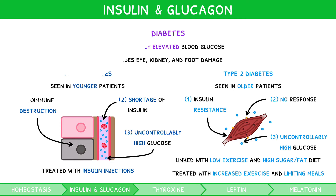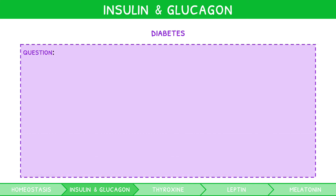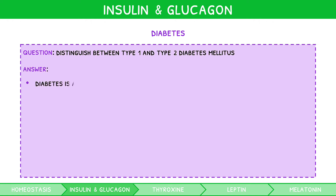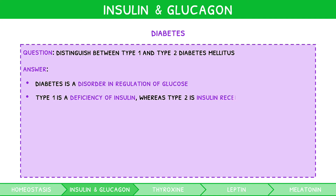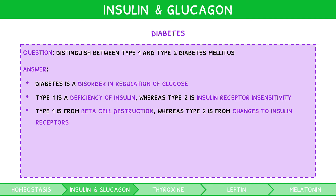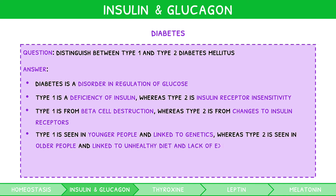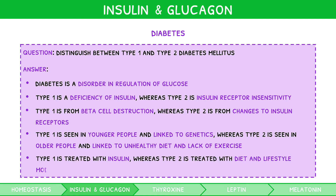Now that you understand the two types of diabetes, we can explore a common exam question: distinguish between type 1 and type 2 diabetes mellitus. Diabetes is a disorder in the regulation of glucose levels. In type 1 there is a deficiency of insulin, whereas in type 2 there is a resistance to insulin. In type 1, this results from the destruction of beta cells in the pancreas, whereas in type 2 it is caused by changes to insulin receptors. Type 1 is typically seen in younger people, linked to genetics, whereas type 2 is seen in older people, linked to an unhealthy diet and lack of exercise. Additionally, type 1 can be treated with insulin, whereas type 2 is treated with diet and lifestyle modification. For your IB Biology exam, you must be confident distinguishing the types of diabetes, so spend some time revising it.